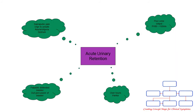We now move on to acute urinary retention. This happens over hours and is usually much more painful. You can feel the bladder on palpation or percussion. There will be suprapubic pain, an urge and a feeling of needing to urinate, but there will be reduced urine output.